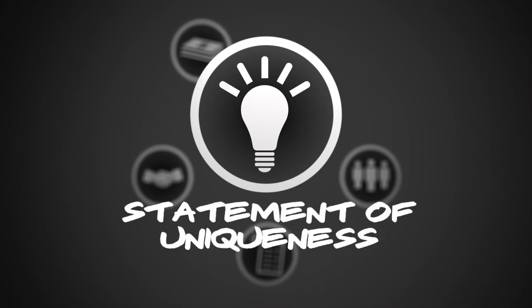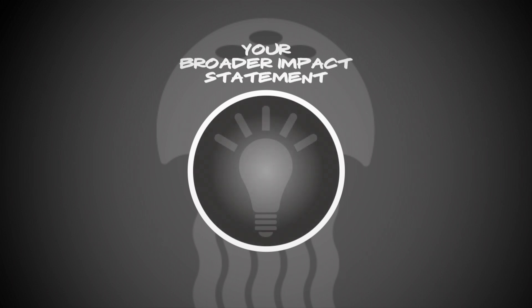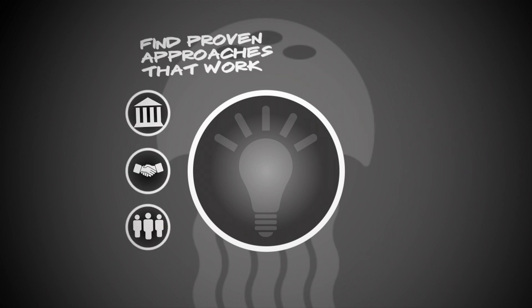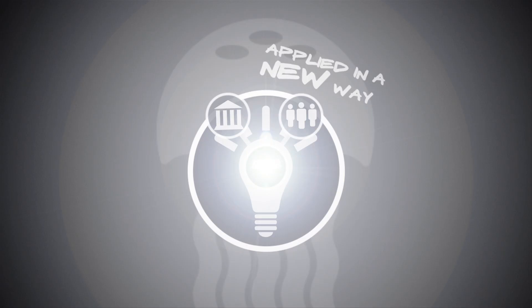Statement of uniqueness: your broader impact statement should aspire to the same level of uniqueness that your research does. No one wants to fund work that's already being done. The key is to find broader impact approaches that are proven to work and apply them to your research in a new way — you have to get creative. If you try to identify and do too many different things, that's a pitfall you want to avoid. You want broader impacts integrated with the science, and it has to bring some uniqueness to advance the field. That is what separates one project proposal from another.